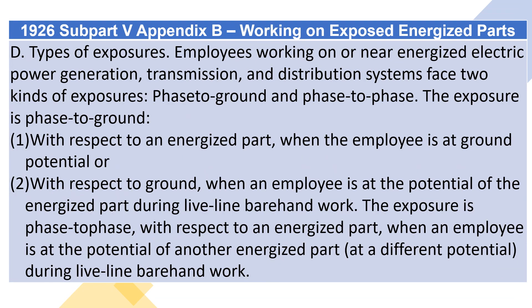Types of exposures: employees working on or near energized electric power generation, transmission, and distribution systems face two kinds of exposures — phase-to-ground and phase-to-phase. The exposure is phase-to-ground with respect to an energized part when the employee is at ground potential, or with respect to ground when an employee is at the potential of the energized part during live-line bare-hand work. The exposure is phase-to-phase with respect to an energized part when an employee is at the potential of another energized part at a different potential during live-line bare-hand work.